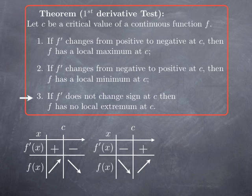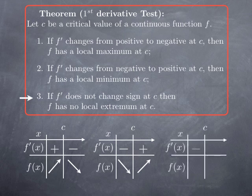The third possibility: f' does not change sign at c, even though c is a critical value. It could be that f' is not defined at c, or that it equals zero but keeps the same sign on either side of c. For instance, c could be a critical value but f' is negative on both sides — then f decreases on both sides and there is no local extremum at c.